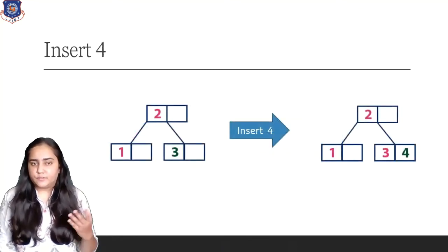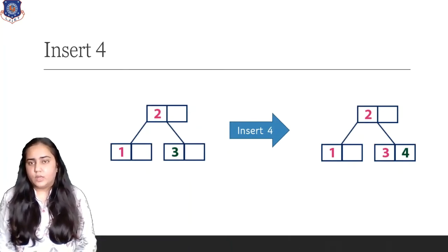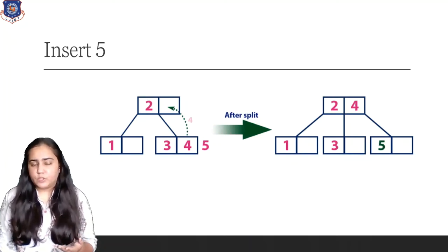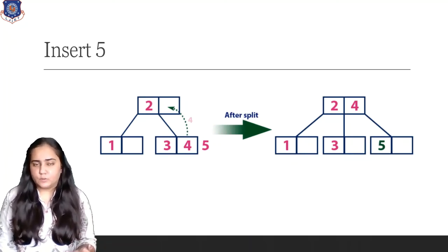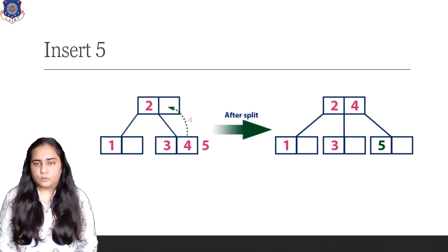Now let's insert 4. Four is greater than 2, greater than 3. So it comes next to 3. Let's insert 5. To insert 5, I know 5 is greater than 2 and greater than 4. So it should come next to 4, but there is no space. So like I said, it grows upwards, but there's no need to grow. You just need to pick one of the keys to go up. Because it's 3, 4, 5, and 4 is in the middle, I will select 4 to go to the root.